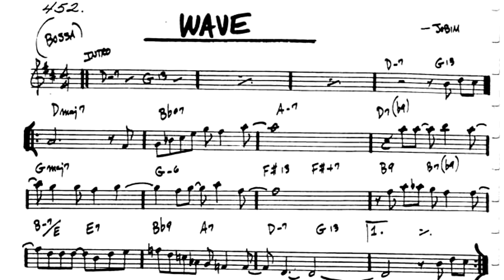The bridge is fairly straightforward as it modulates through a couple of 2-5-1 sequences in the key of F major and E flat major. The last bar in the bridge is A7 flat 9, and that's going to function as a V7 chord, leading us back to the I major 7 chord in the final A section.